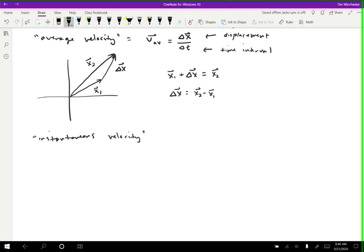And instantaneous is inconvenient to say. So sometimes we'll just say velocity. If someone just says velocity, you can always assume they mean instantaneous velocity rather than average velocity.